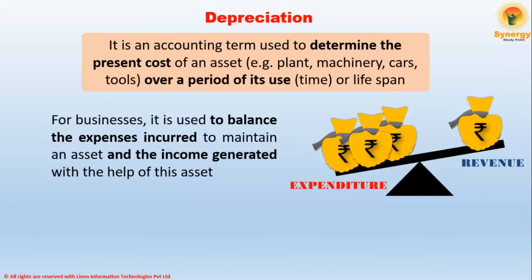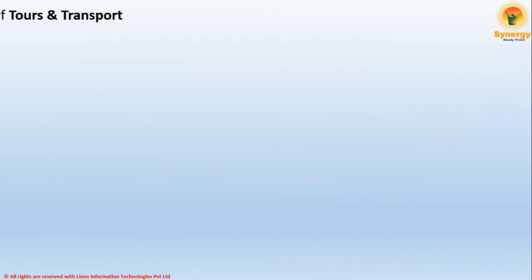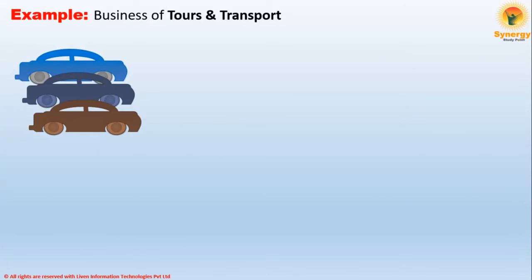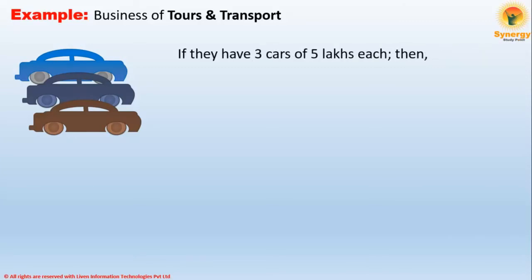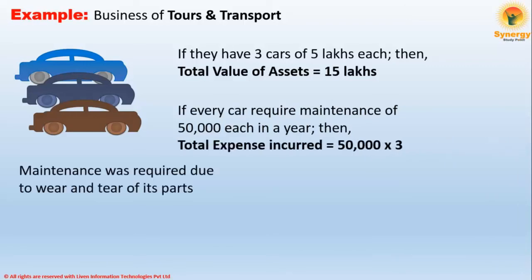To understand this, let's take an example of a business of tours and transport. Imagine they have many vehicles through which they earn income. Consider this: if they have 3 cars of 5 lakhs each, then the total value of assets would be 15 lakhs. If every car requires maintenance of 50,000 each in a year, then total expenses would be 50,000 per car multiplied by three.